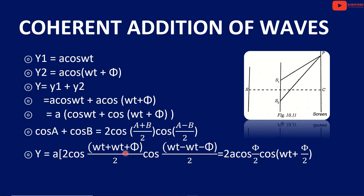We write 2a. So 2a times cos((ωt + ωt + φ)/2) times cos((ωt − ωt − φ)/2). That gives us cos(φ/2), since cos(−φ/2) = cos(φ/2). So the resultant is y = 2a cos(φ/2) cos(ωt + φ/2).